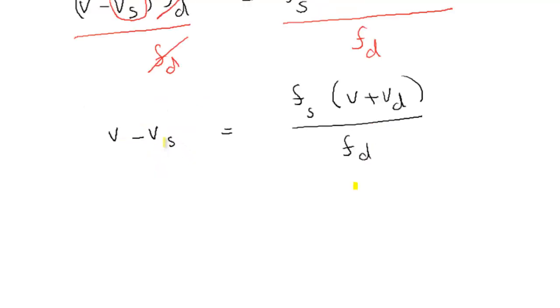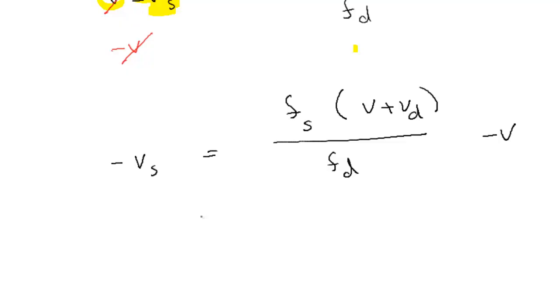We're getting close to having VS by itself, but we're still not quite there. We have a negative VS, which is going to cause problems. And we have this V over here. So, we have to do another step. We're going to subtract V from both sides. This V comes out with this. And now we can rewrite it. We now have negative VS equals FS times the quantity V plus VD divided by FD, that quantity minus V.